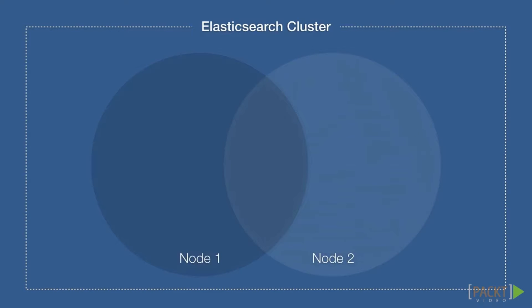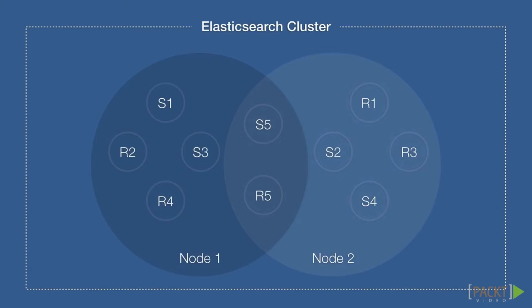Each Elasticsearch cluster can contain multiple indexes split across any number of nodes and replicas. As your data needs grow, more nodes can be added to your cluster and Elasticsearch will automatically rebalance them and route all indexing and searching requests to the correct nodes. During the course, we will get a detailed understanding of these concepts as we build our search server. Elasticsearch will be the backbone of our application and we can use its simple and clean API to power our search interface.